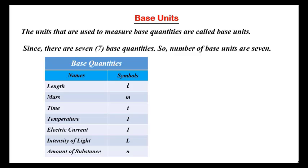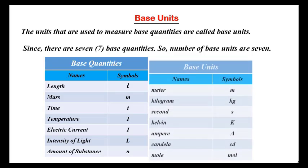We have 7 base quantities: length (symbol: small l), mass (small m), time (small t), temperature (capital T), electric current (capital I), intensity of light (capital L), and amount of substance (small n). These are our total 7 base quantities, and today we will look at the units set for each of them.